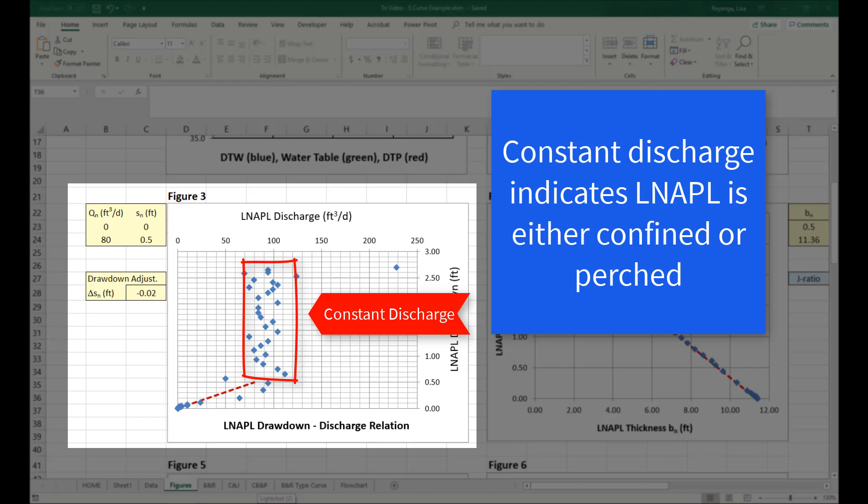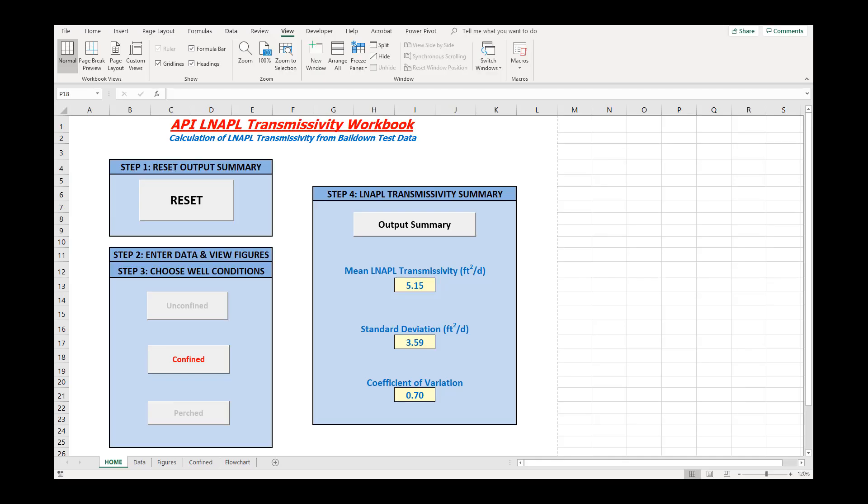The primary analysis methodology is to analyze the constant discharge portion of the test using the appropriate hydrogeologic condition selected from the Home tab.